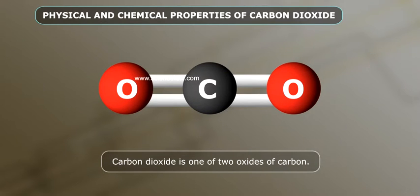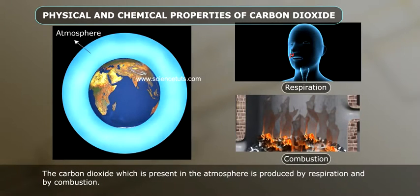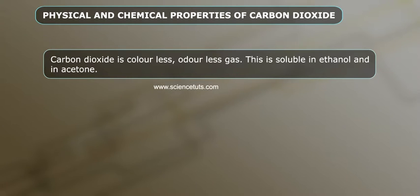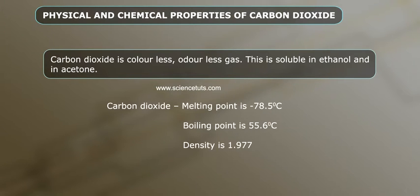Carbon dioxide is one of the two oxides of carbon. The carbon dioxide present in the atmosphere is produced by respiration and by combustion. Carbon dioxide is a colorless, odourless gas, soluble in ethanol and acetone. Its melting point is minus 78.5 degrees centigrade and boiling point is minus 55.6 degrees centigrade.